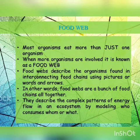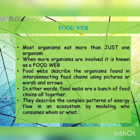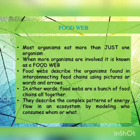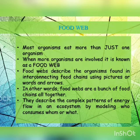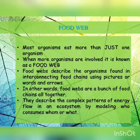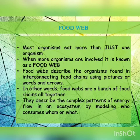Now we will see what a food web is. A food web is a network of more than one food chain — when more than one food chain comes together it becomes a food web, like a spider's web. Most organisms eat more than just one type of organism. Just as we eat vegetables, eggs, milk, and pulses, animals also depend on different types of food. When organisms eat more than one type of organism, it becomes a food web.